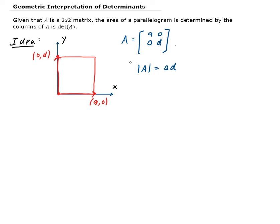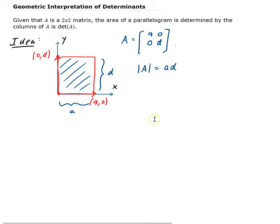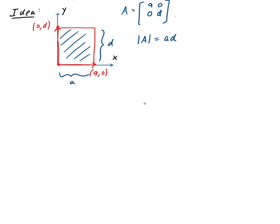And that's exactly the area we have here. The base has length A and the height is D units, so the area is A times D. This leads us to a way to determine the area of a parallelogram given just its vertices. The key is that we need to make sure we're working from the origin.